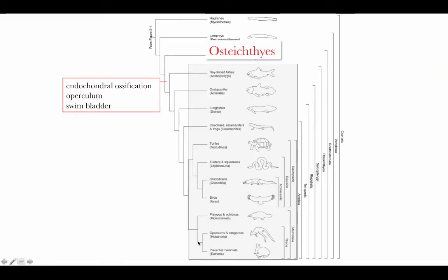Now let's take a look at the other group, the Osteichthyes. The main synapomorphies that distinguish the Osteichthyes are first endochondral ossification — the ossification of the internal skeleton, the origin of having that internal bony skeleton. They also have an operculum, a bony cover for those pharyngeal slits to protect their delicate gills. And they control their buoyancy using an organ called a swim bladder — a gas-filled organ that they can add gas to or remove gas from depending on whether they want to move up or down in the water column.